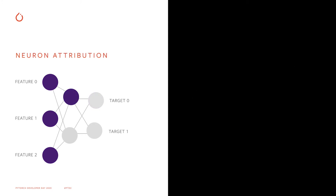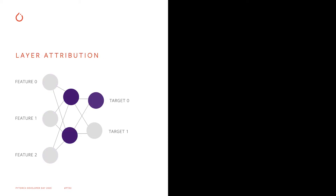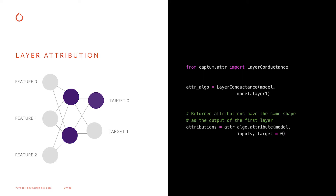The same philosophy is valid for neuron attribution — we select an internal neuron and attribute to input features. We can use a neuron gradient-shap algorithm and call attribute by passing our model, inputs, and the neuron index. The same definition is also valid for layer attribution, where we attribute the output target prediction to a hidden layer. For example, we can compute layer attribution using layer conductance.